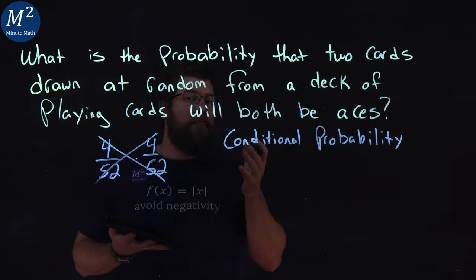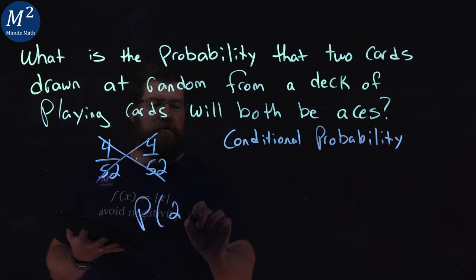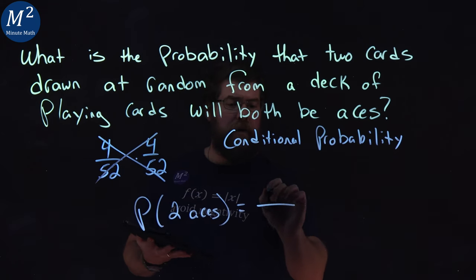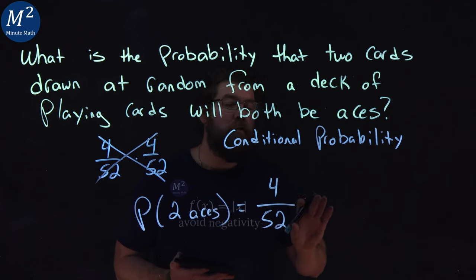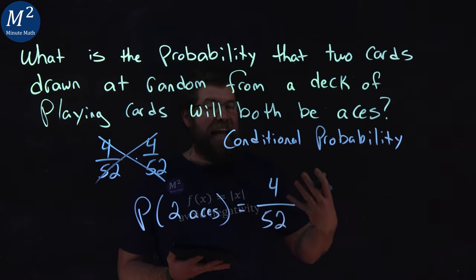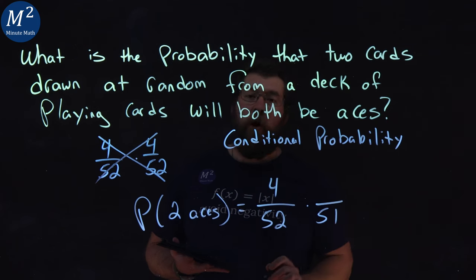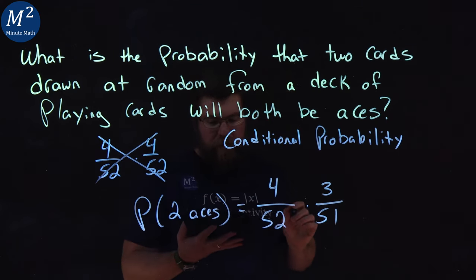In this case, we have two aces. So, a probability of two aces drawn from a deck. The first one, there are four aces out of 52 in the deck. But once you've drawn that first ace out of the deck, there are 51 cards left and three aces left in the deck.